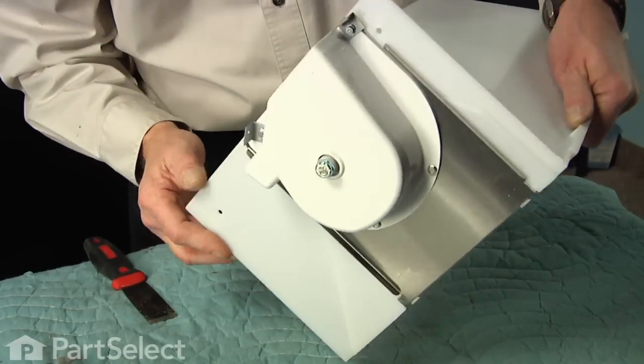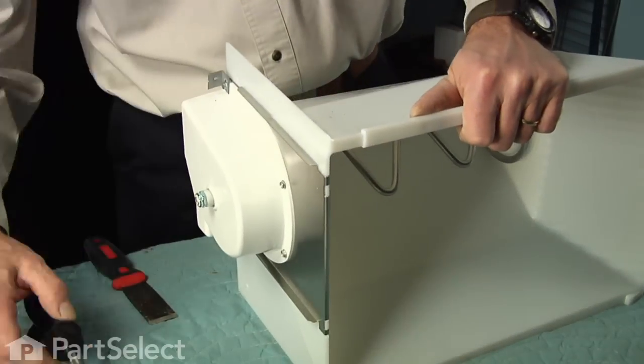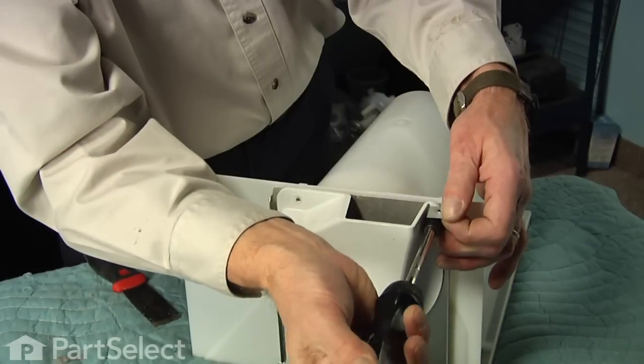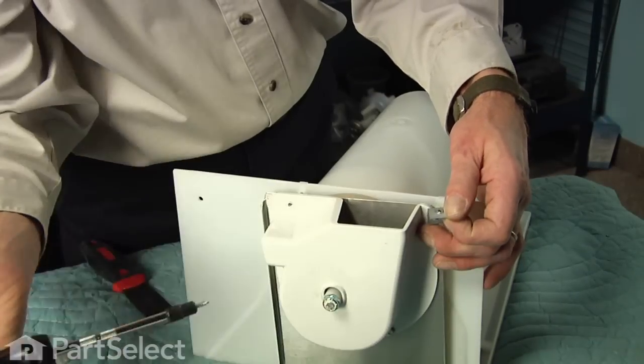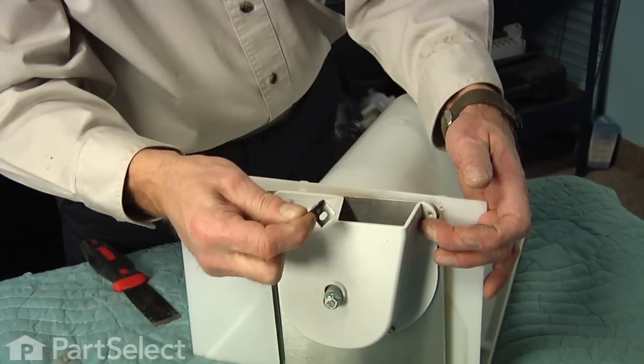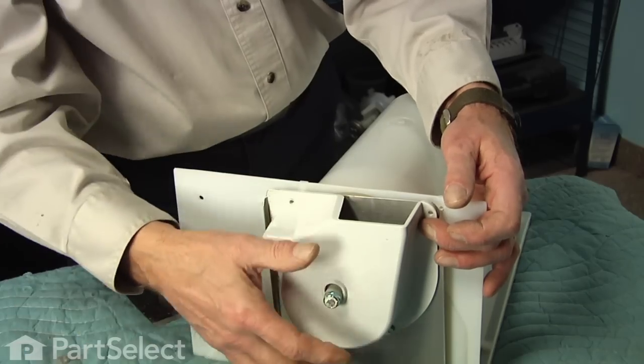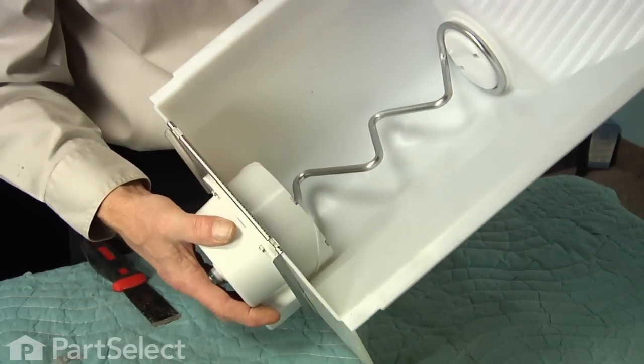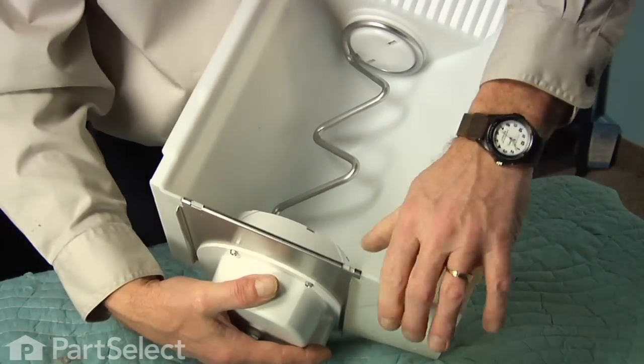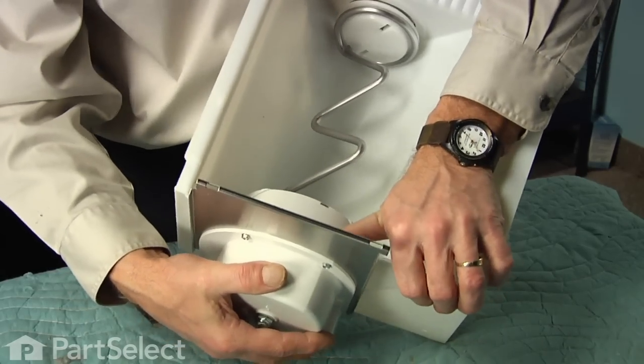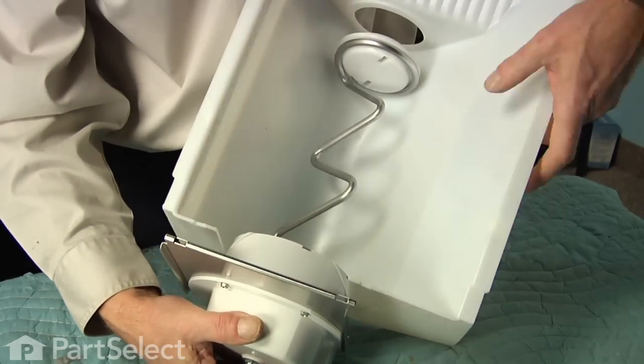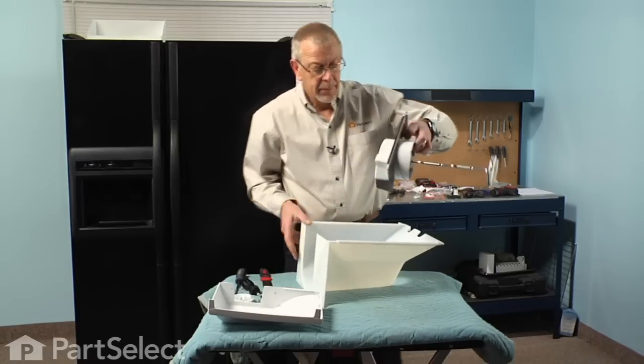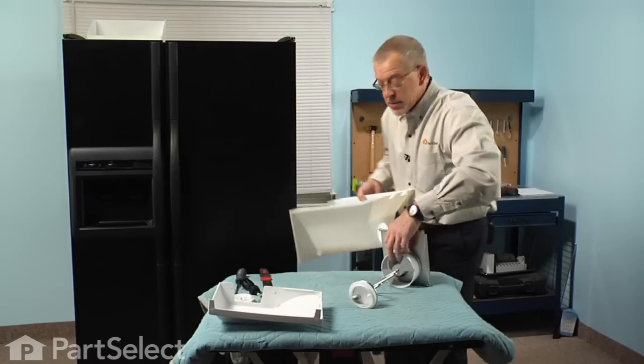Now along the bottom we had those two screws that hold the angle brackets in place, we need to remove both of those. That will allow us to remove the auger assembly from the bin. Simply lift up on it to disengage the tabs at the top and pull it forward, and now we have access to the rear cap.